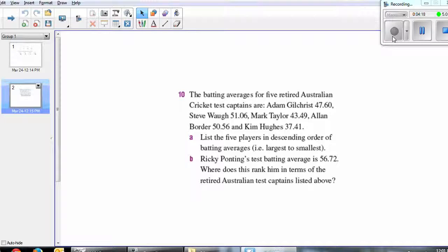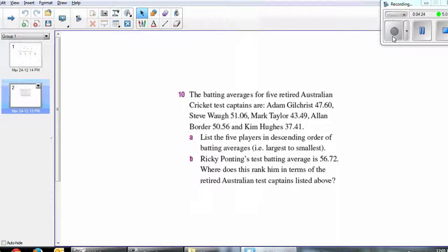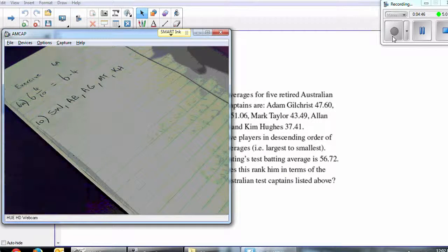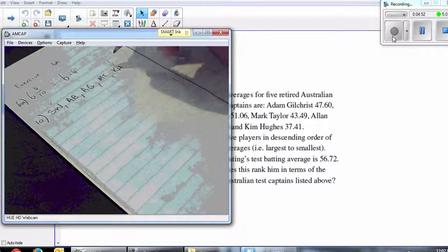Well, Steve Waugh is first. He had the highest average, 51. Then AB, Alan Border, had the next highest. Then Gilly had the next one, and then Mark Taylor, Tubby, great captain. And Kim Hughes had the last one. So we just list them like that. So that is in descending order, largest to smallest.